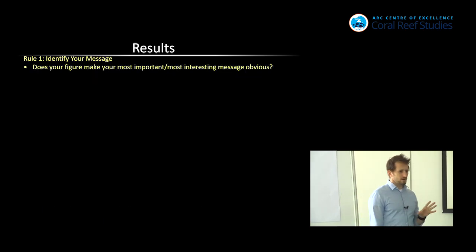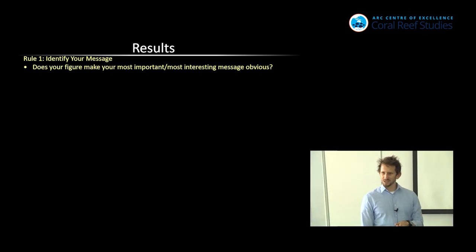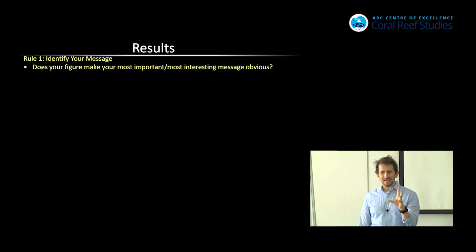So rule one is identify your message, and this should be familiar from earlier when we talked about really having that key message, that key figure. So identify what is the message of your figure, and does your figure make your most important or your most interesting message obvious? I want to share with you some of the work in progress of one of my former students. He's gone on to get a postdoc already, so he's been successful, but I want to use some examples from an early iteration of one of his papers.